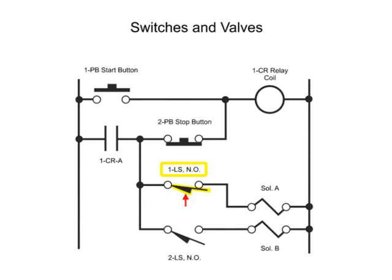Limit switch 1LS is a normally open switch. The arrow shown next to the switch indicates that the limit switch is normally opened but is held closed prior to the start of the cycle.